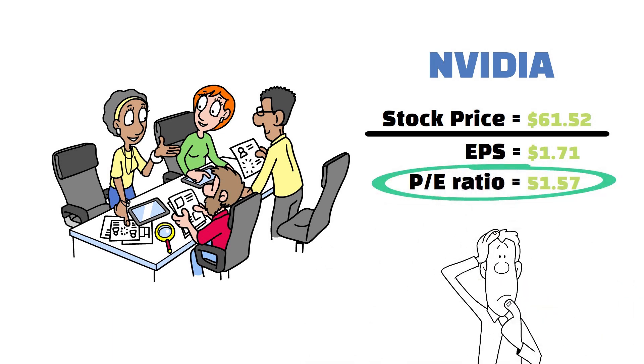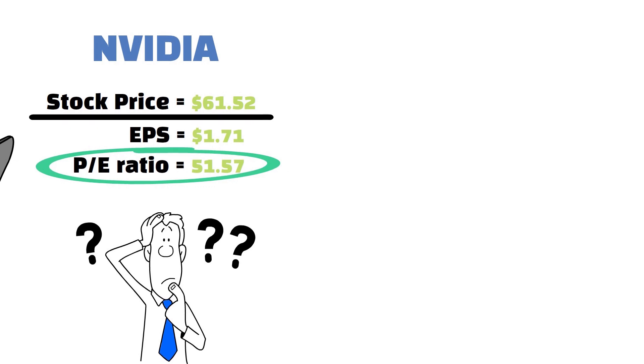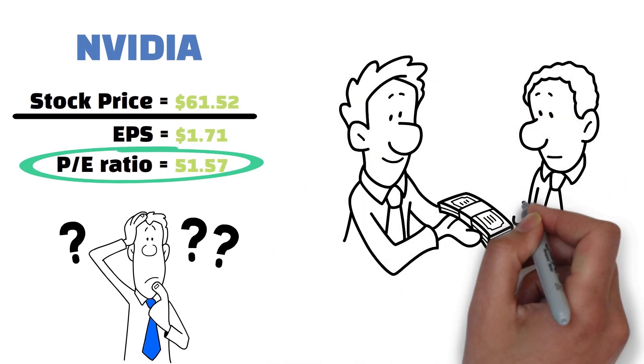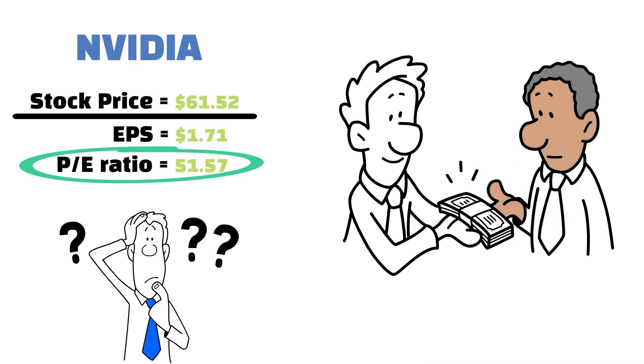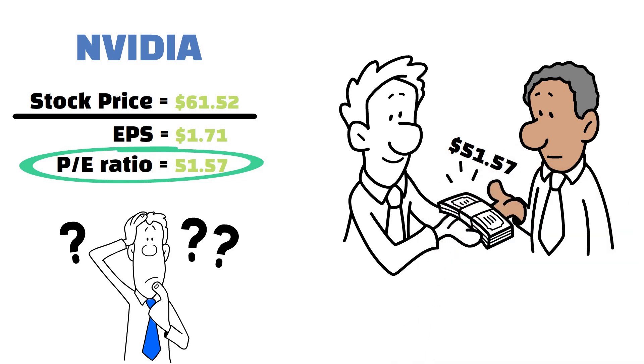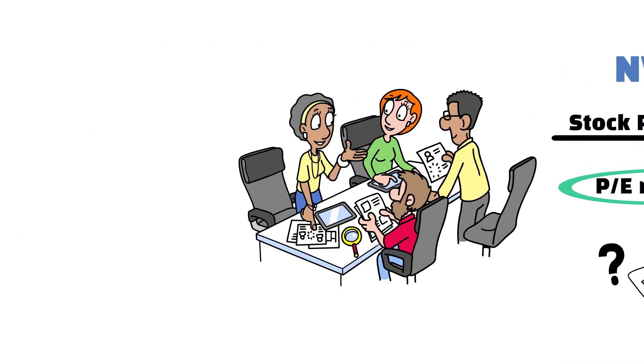So what does this mean? This means that investors are willing to pay $51.51 for every dollar of earnings that NVIDIA makes. This helps you gauge how the market values a particular company's earnings relative to its stock price. Well, it only becomes useful if you add context. So let's add some.